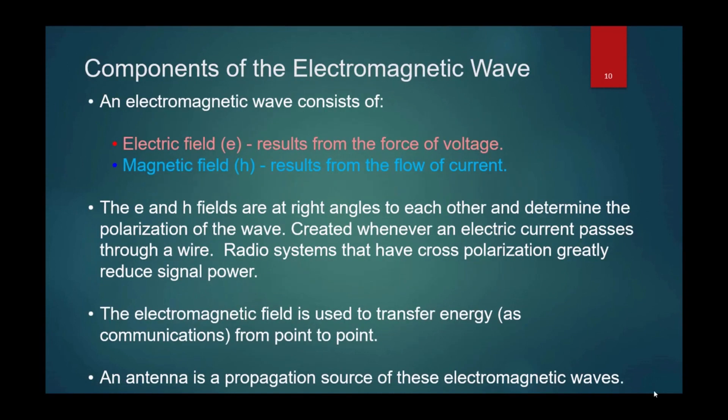Components of the electromagnetic wave - this wave is the radio frequency energy your system is radiating. It consists of an electric field or E field which results from the force of voltage, and a magnetic field, the H field, which results from the flow of current. The E and H fields are at right angles to each other and determine the polarization of the wave, created whenever an electric current passes through a wire. Radio systems that have cross polarization greatly reduce signal power. The electromagnetic field is used to transfer energy as communications from point to point. An antenna is a propagation source of these electromagnetic waves.